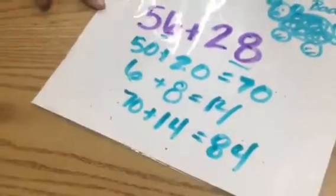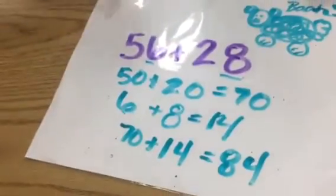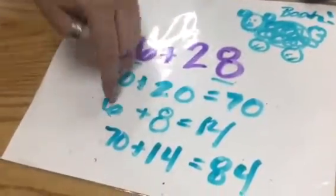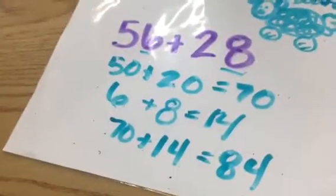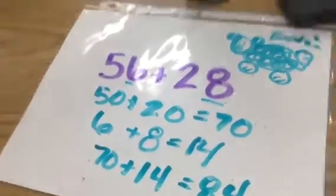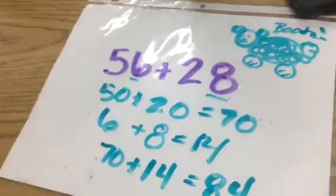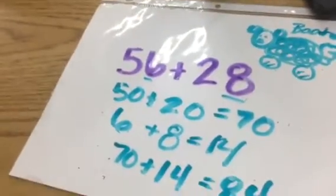What a cool strategy. That's a great strategy, Ms. Huddle. So first I added the tens, then I added the ones. Good job. And you got the answer of 84.